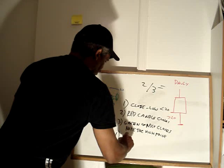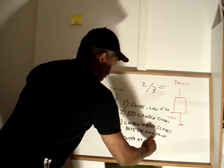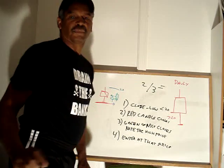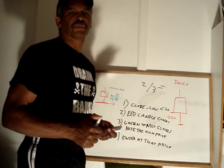Four, enter at that price. Okay? Five, your stop loss is always 10 pips.